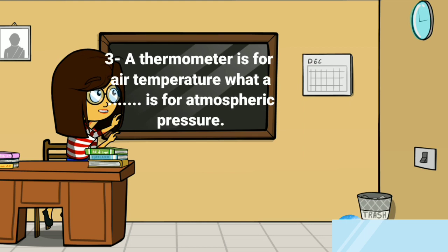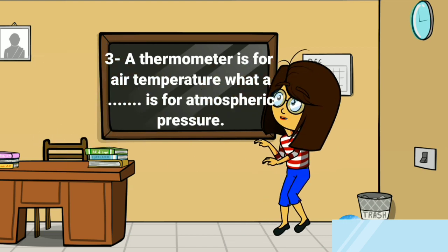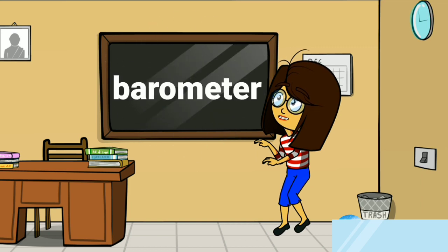Third question: a thermometer is for air temperature — what dash is for atmospheric pressure? Air temperature is measured by an instrument called a thermometer. In the same way, atmospheric pressure is also measured by an instrument, and this instrument is called a barometer. So the answer is barometer.